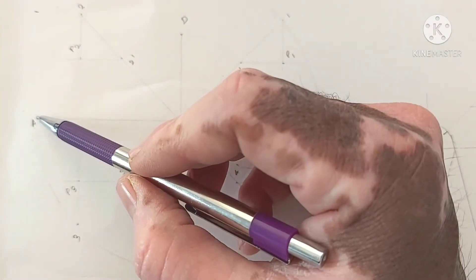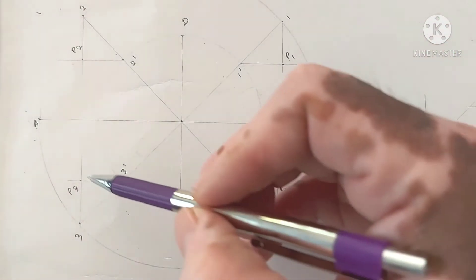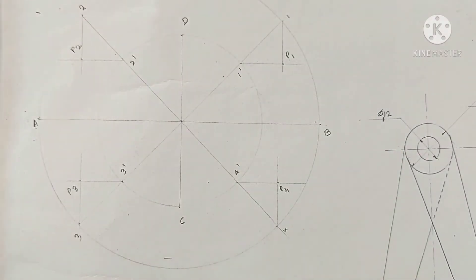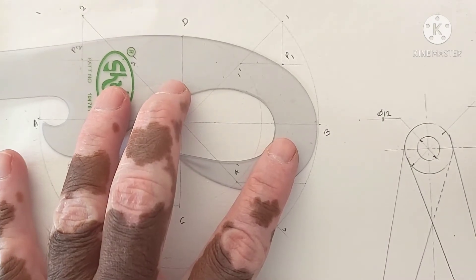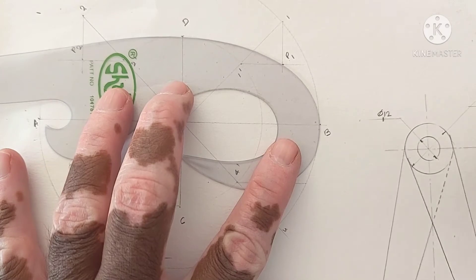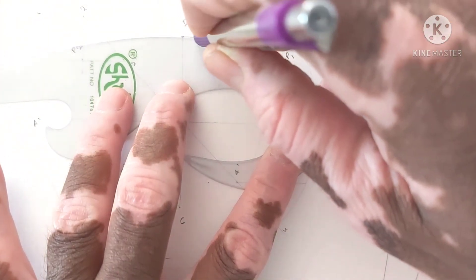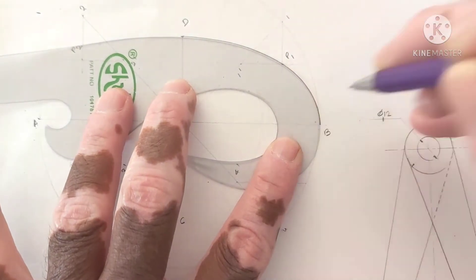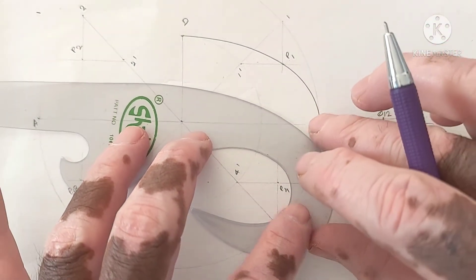Join these points a, p2, d, p1, b, p4, c, p3, a with the help of French curve. How this French curve will be used, French curve maximum minimum 3 point. I am matching these 3 points 1, 2, 3, join these points with the help of French curve. Ellipse will be dark and the other lines will be faint.